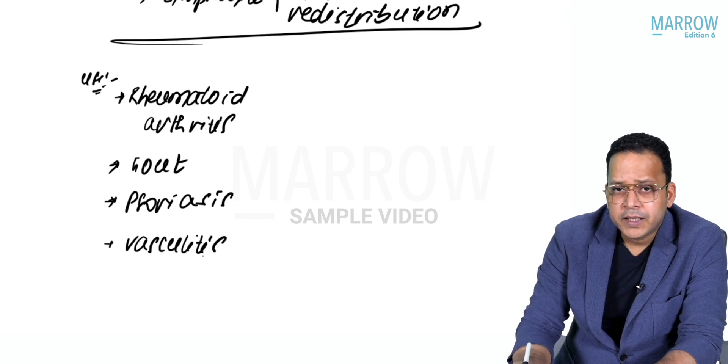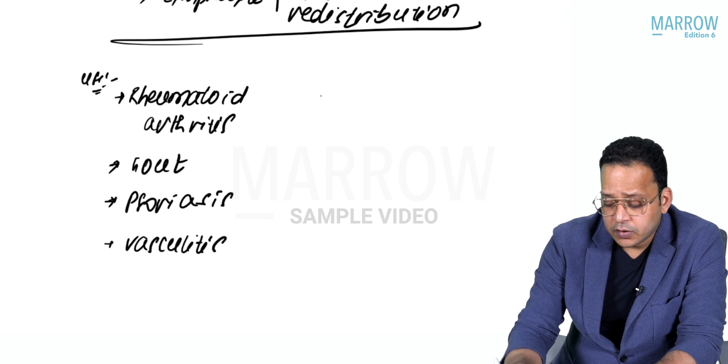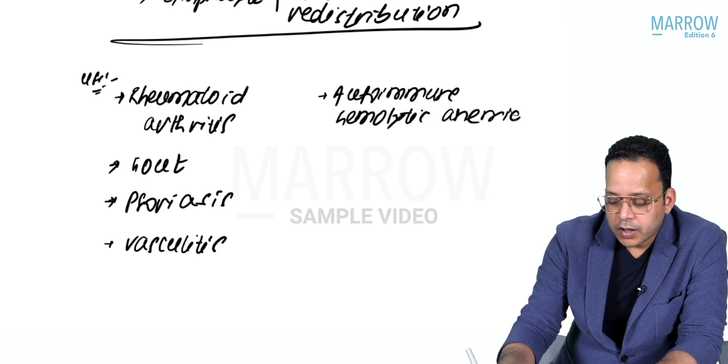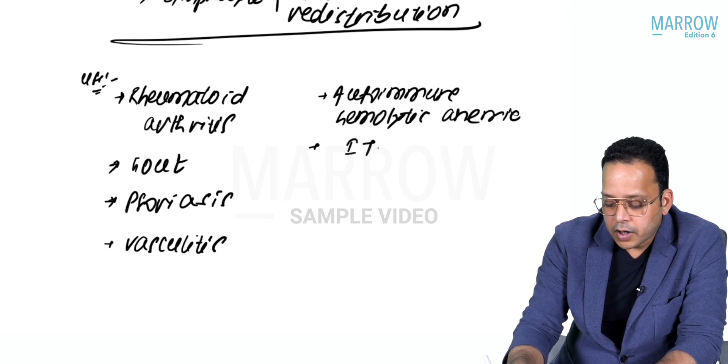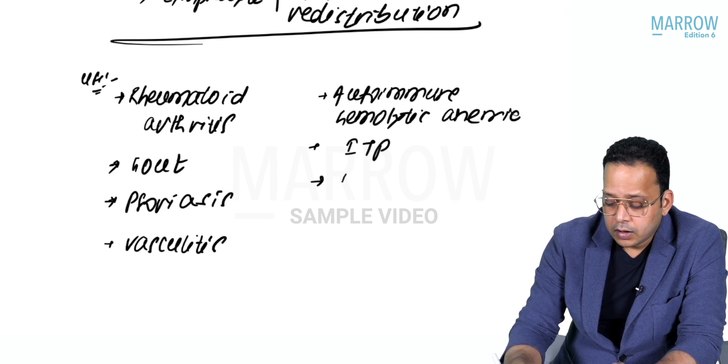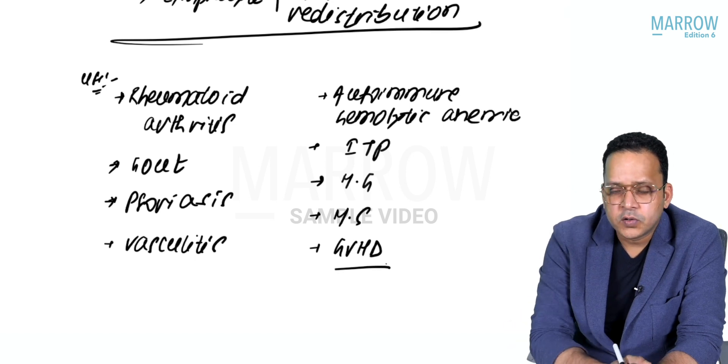I can use it in autoimmune disorders like autoimmune hemolytic anemia, ITP (immune thrombocytopenic purpura), myasthenia gravis, multiple sclerosis, and GVHD (graft versus host disease).